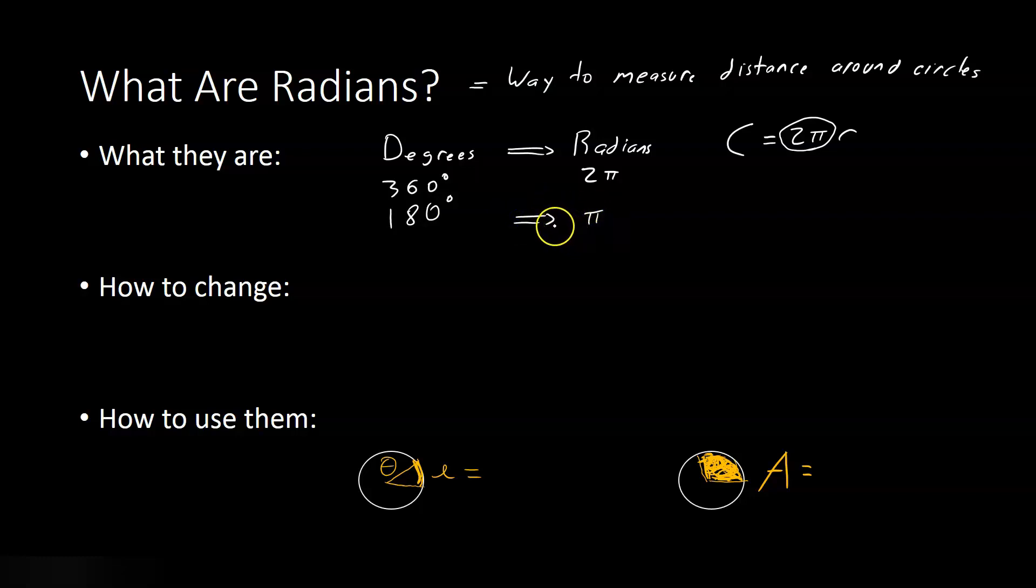It would stand to reason that half that many degrees, or 180 degrees, is pi radians. What you're going to have to do in trigonometry, oftentimes, is use even smaller angles. For example, 90 degrees. We could divide by 2 again and just say pi over 2 radians is the same as 90 degrees.